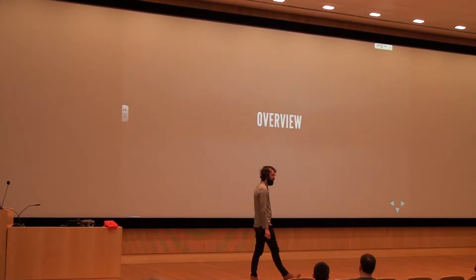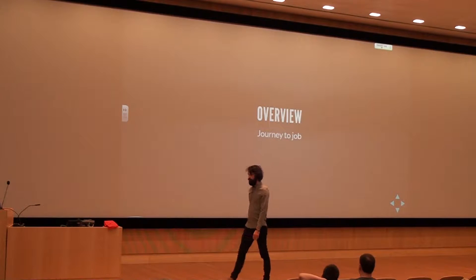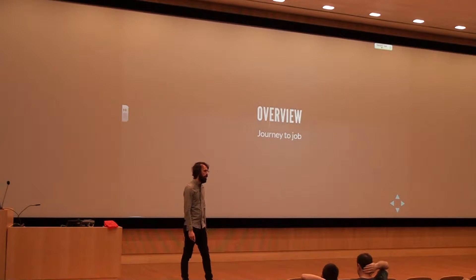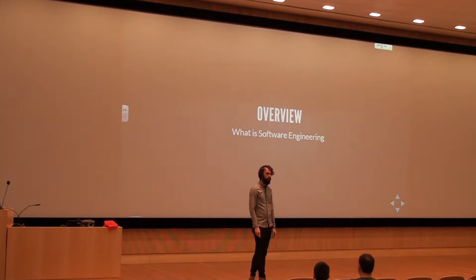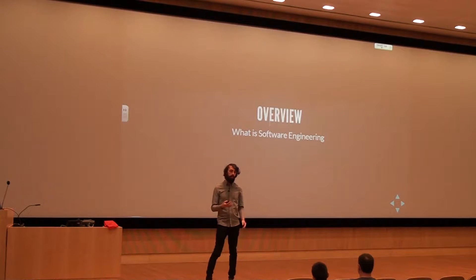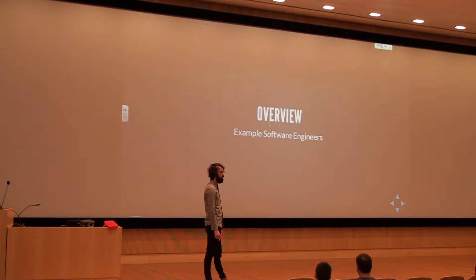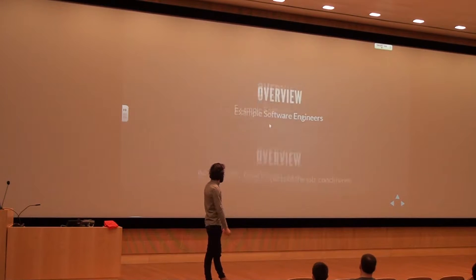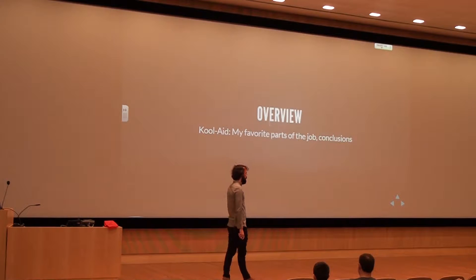Let's see a little bit about what we're going to be talking about today. First, I'll give a bit about my journey and maybe a funny story about how I became a software engineer. I'll then give a quick overview of what software engineering is — its definition, how it relates to some common terms. We'll go into examples of different types of software engineering and different jobs you can do. Then I'll tell you some of my favorite parts of the job and some conclusions about why I think it's a cool job.